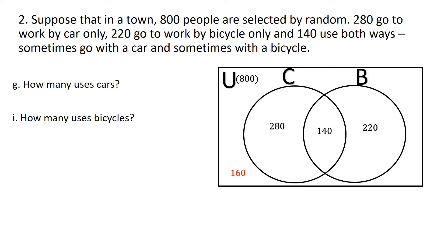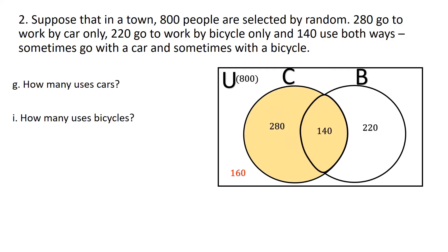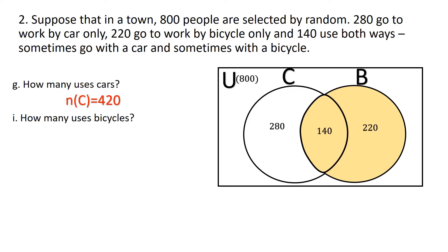Bonus questions: how many use cars, and how many use bicycles? The cardinality of set C includes distinct elements plus the intersection: 280 + 140 = 420. The cardinality of set B includes its distinct elements plus the intersection: 220 + 140 = 360.